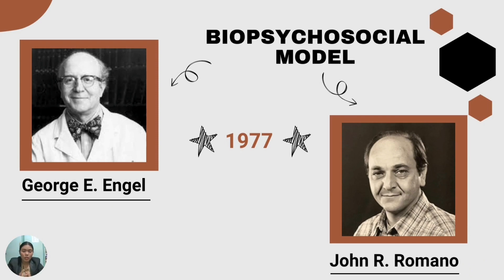The biopsychosocial model was first proposed by George E. Engel and John R. Romano in 1977. As opposed to the biomedical approach, Engel strived for a more complete approach by recognizing that each patient has their own thoughts, feelings, and history. He framed this model for both illnesses and psychological problems. Engel and Romano's publication was adopted by the World Health Organization in 2002 as a basis for the international classification of function.